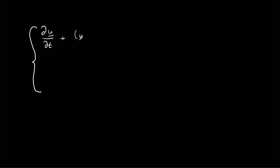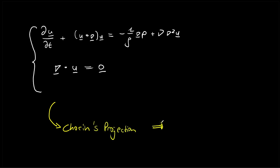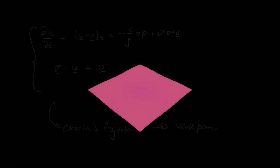The Navier-Stokes equations are the fundamental description of fluid motion. In order to solve them with the finite element method in FEniCS, we have to apply a projection method in order to enforce the incompressibility. Then we have to derive weak forms for all intermediate steps. Let's do that in detail.